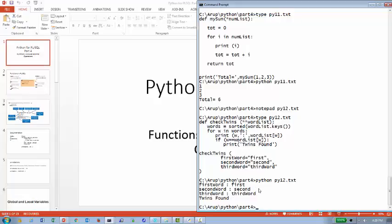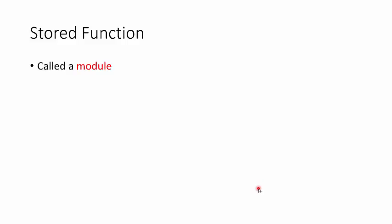Functions written inline are only available within that program's execution. If you want reusable functions — like stored functions or procedures in PL/SQL — you need to store them somewhere. In Python, this is called a module. A module is very similar to a stored package in PL/SQL. You create a `.py` file, put your functions in it, and that file becomes the module.